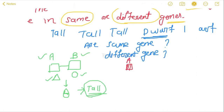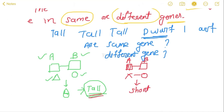Now let's take another example where gene A is mutated and gene B is normal. If gene A is mutated, it cannot produce the triangular protein. But gene B will produce the circular protein. So the result will be a short or dwarf plant, because for the tall plant you need both the triangular protein and the circular protein.